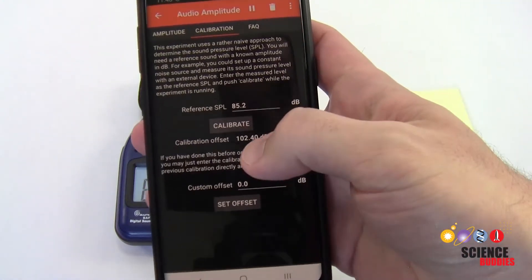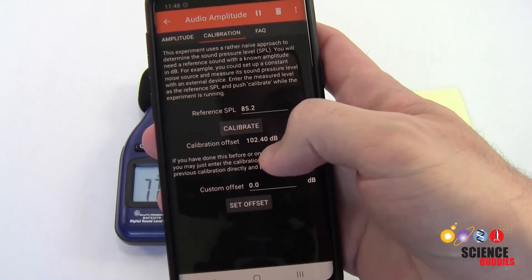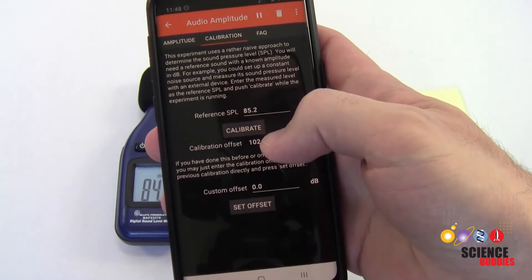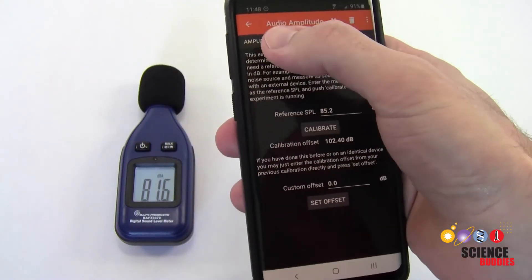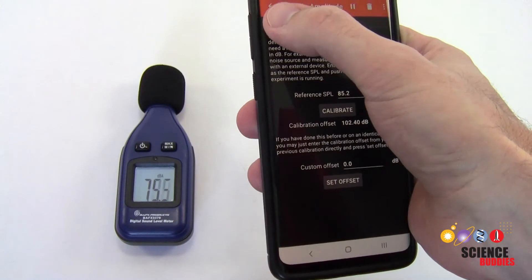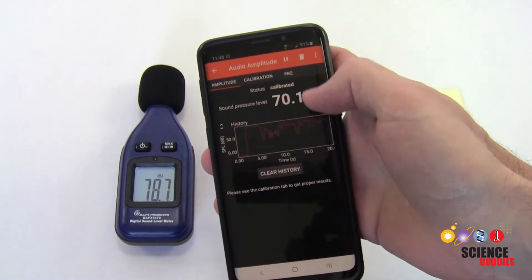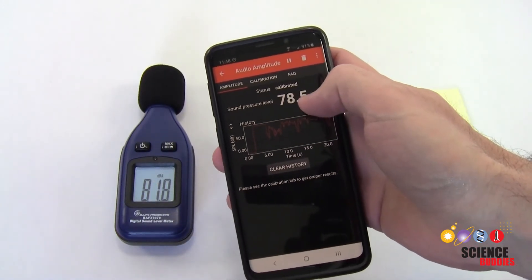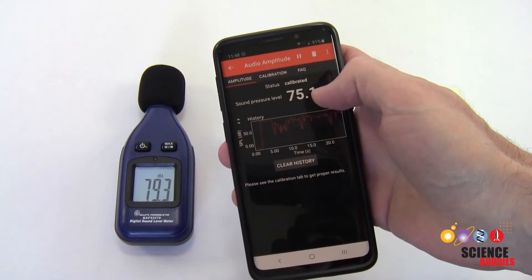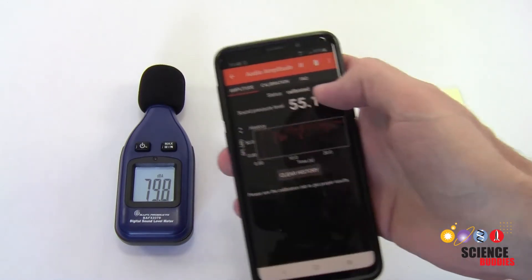We can now see that Firefox has automatically calculated an offset to go from that negative decibel value to a value that's going to make a little more sense. If I go back over here to the amplitude page now, we can see that I'm getting numbers in the 0 to 100 range that are more consistent with what I would expect using the decibel meter.